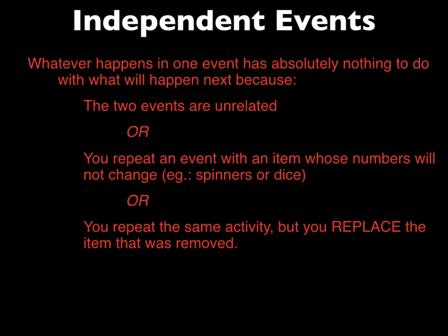Let's start with independent events. Whatever happens in one event has absolutely nothing to do with what will happen next, because the two events are unrelated. From the word independent, they can stand by themselves and whatever happens to that event does not affect the other. You can also say this: when you repeat an event with an item whose numbers will not change — for example, spinners will not change or dice, even if you repeat spinning the spinner a hundred times, the number of probabilities will not change. Or when you roll the dice a hundred times, there will always be six faces, so that will never change.